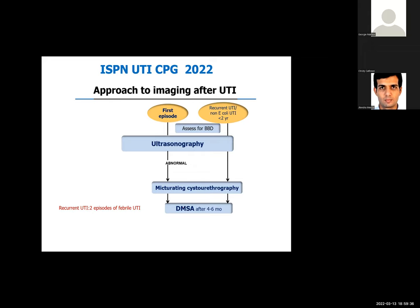DMSA scan is used to look for kidney scarring and should ideally be done four to six months after a febrile UTI episode. If done immediately during the acute episode, non-specific uptake defects representing acute inflammation may be confused with permanent kidney scarring. DMSA after four to six months allows detection of persistent or chronic scarring, which can have long-term consequences.